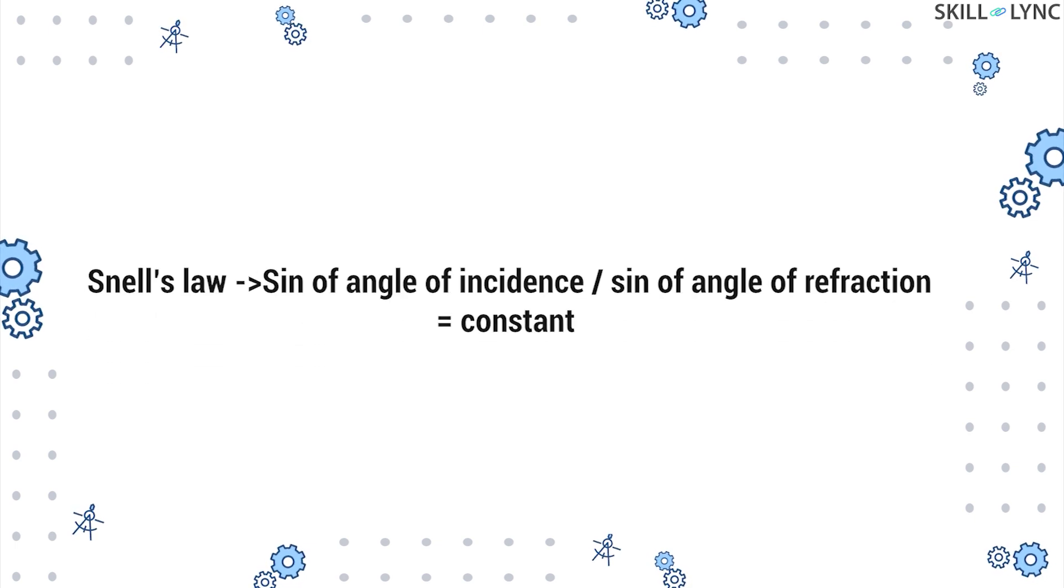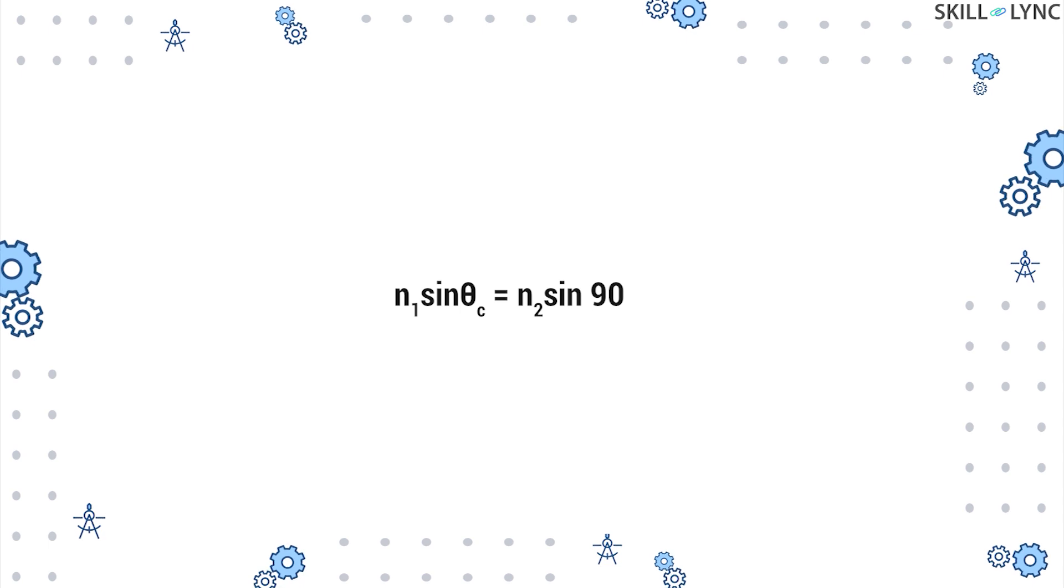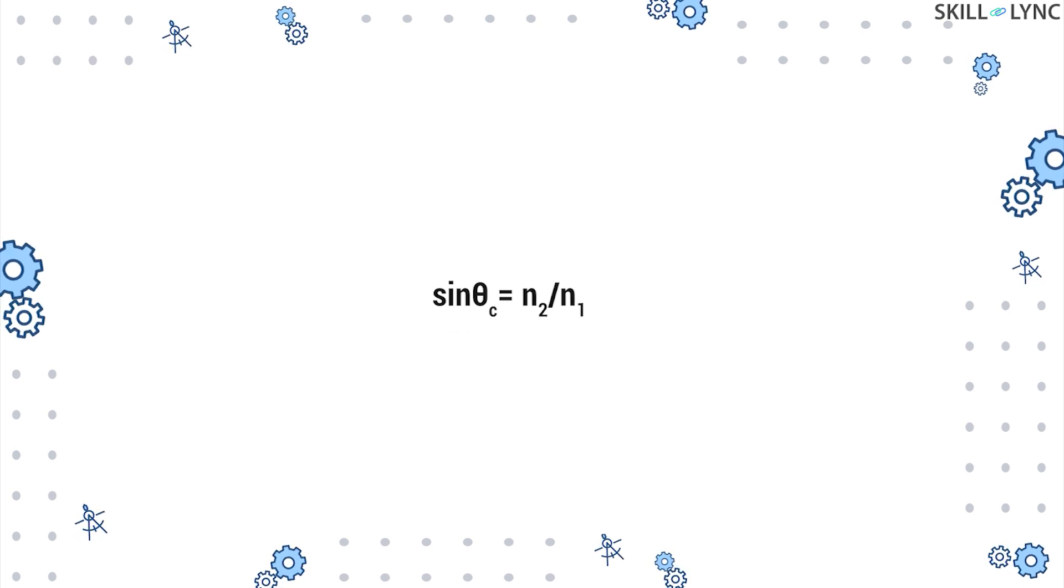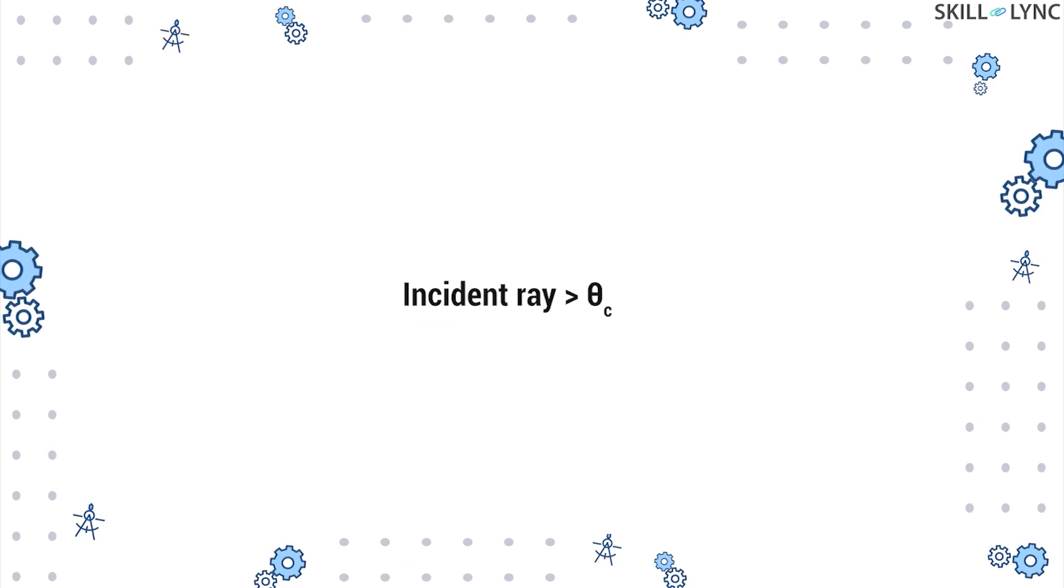If we consider n1 to be the refractive index of the core and n2 to be the refractive index of the cladding, then on applying Snell's law we get n1 sin θc = n2 sin 90°, which implies that sin θc = n2/n1. Thus, for a ray to be reflected back into the core, the ray should be incident at an angle greater than θc.